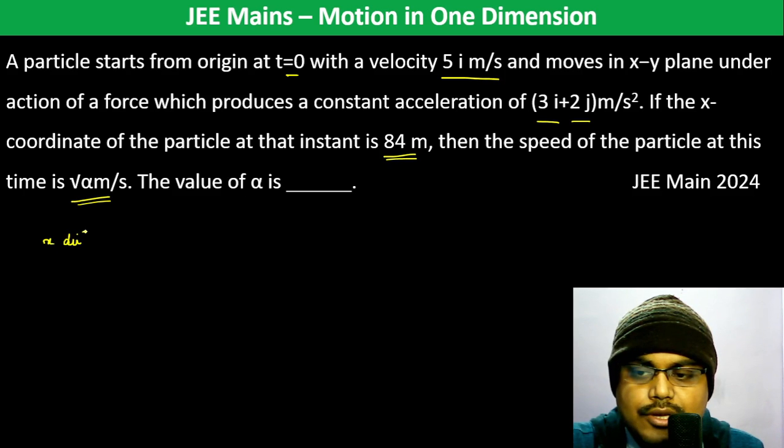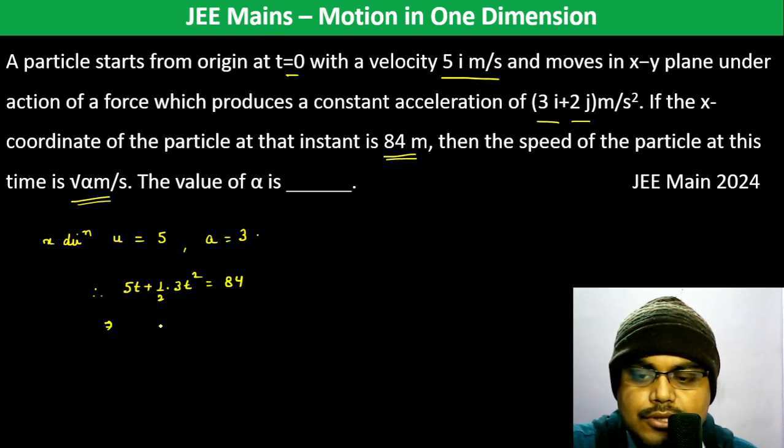In x-direction, initial velocity is 5 and acceleration is 3, so 5t + ½(3)t² = 84.